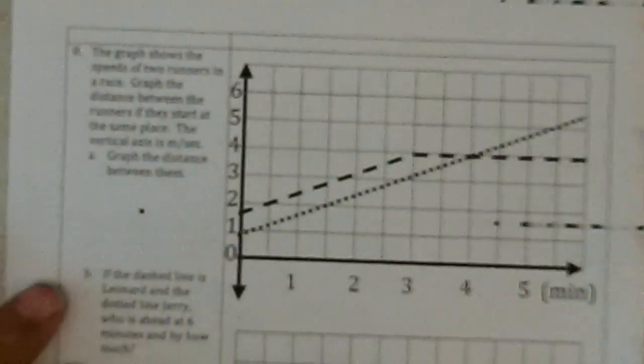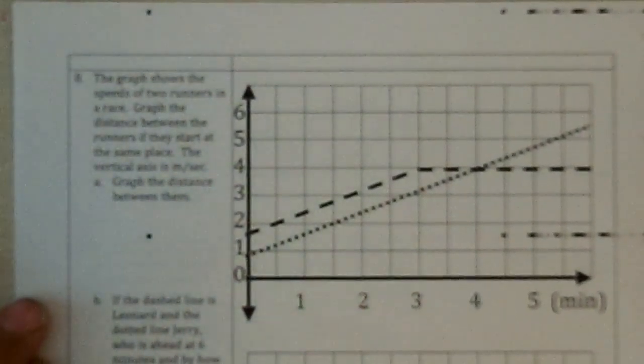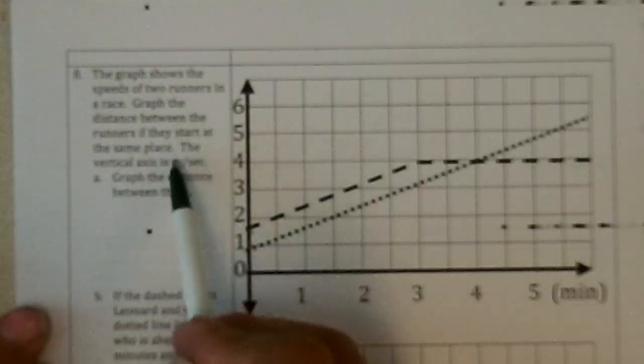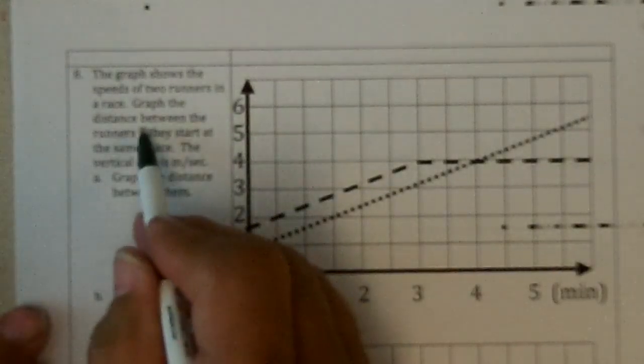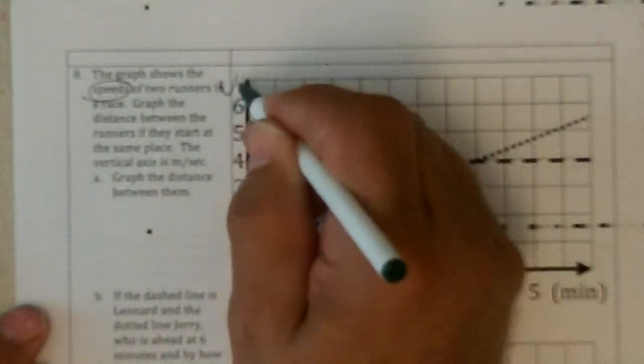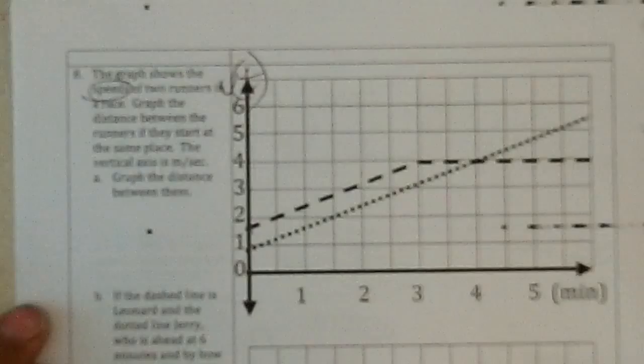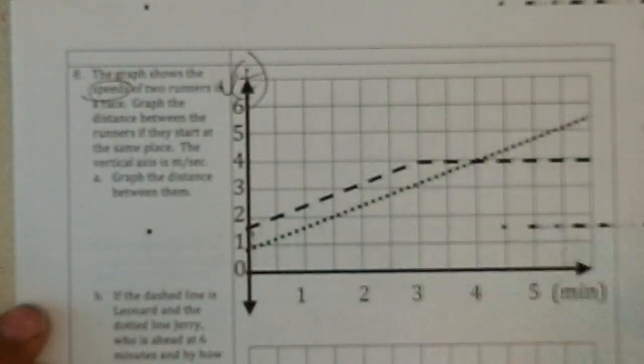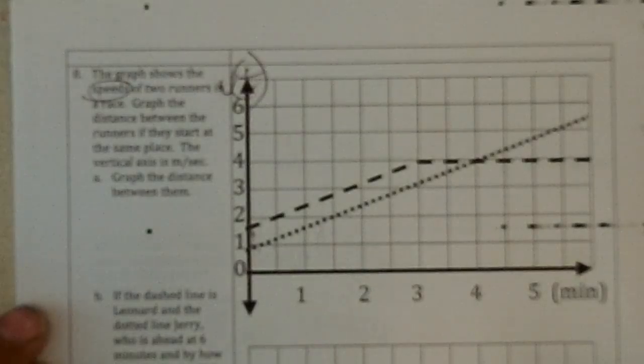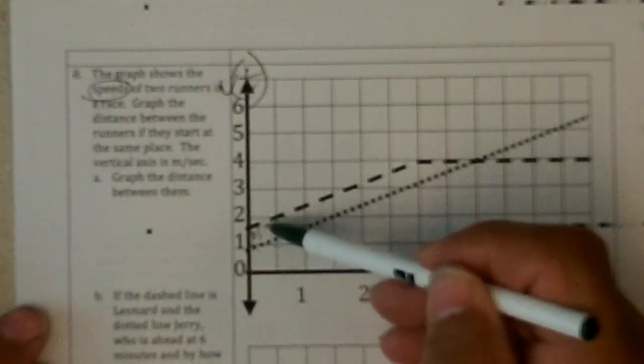Number 8. We have the two runners and this is a graph of their speeds. So this is a velocity graph. The area under the one is how far the one runner runs. The area under the other is how far the other one runs. And how far apart they are is the area between.